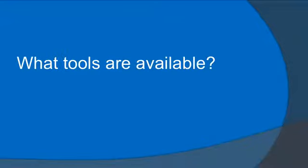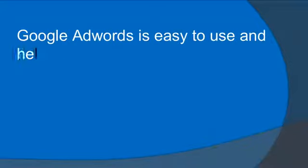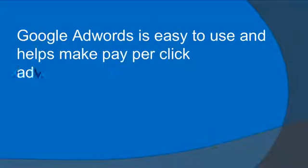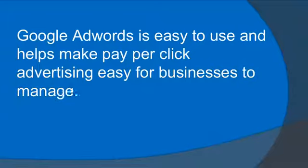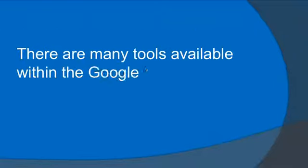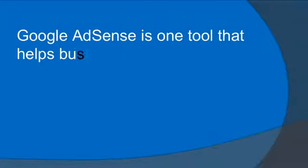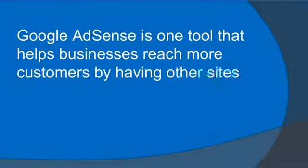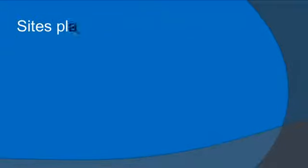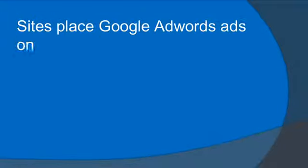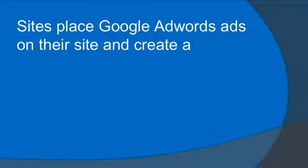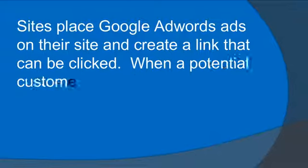What tools are available? Google AdWords is easy to use and helps make pay-per-click advertising easy for businesses to manage. There are many tools available within the Google AdWords service. Google AdSense is one tool that helps businesses reach more customers by having other sites host their ads. Sites place Google AdWords ads on their site and create a link that can be clicked.